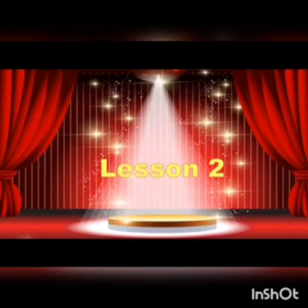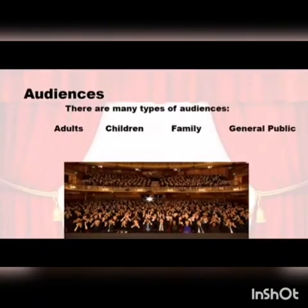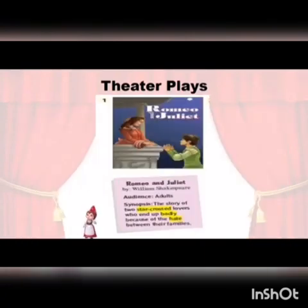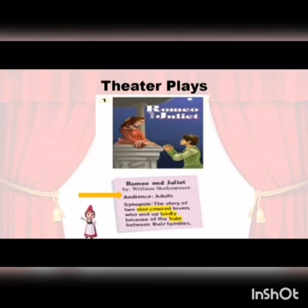Lesson 2. Keep in mind that there can be many types of audiences, like adults, children, family, or general public. Let's see some examples of theater plays. Romeo and Juliet by William Shakespeare. The audience for this play is for adults. The synopsis is about the story of two star-crossed lovers who ended up badly because of the hate between their families.